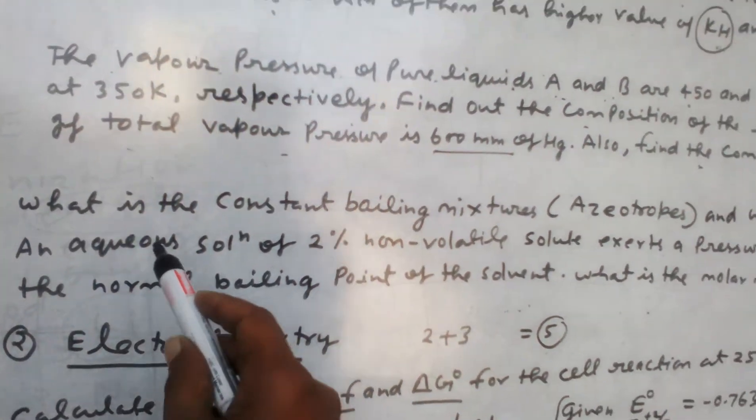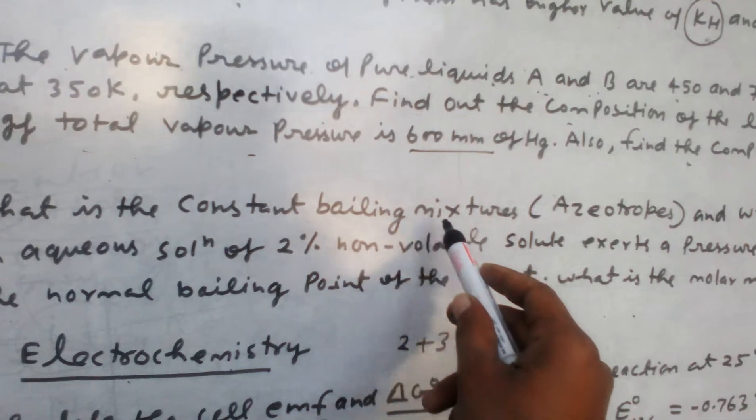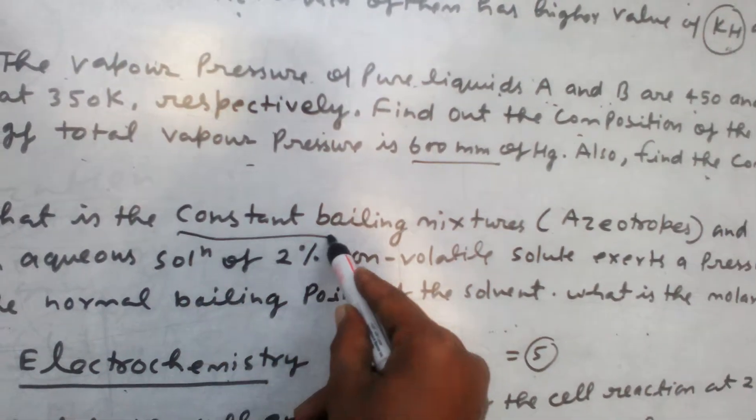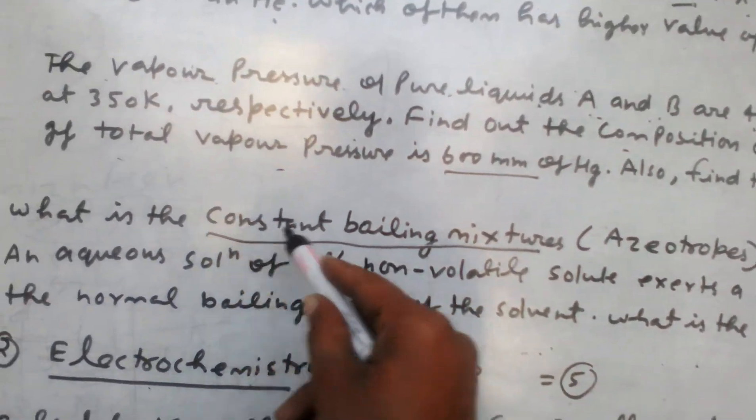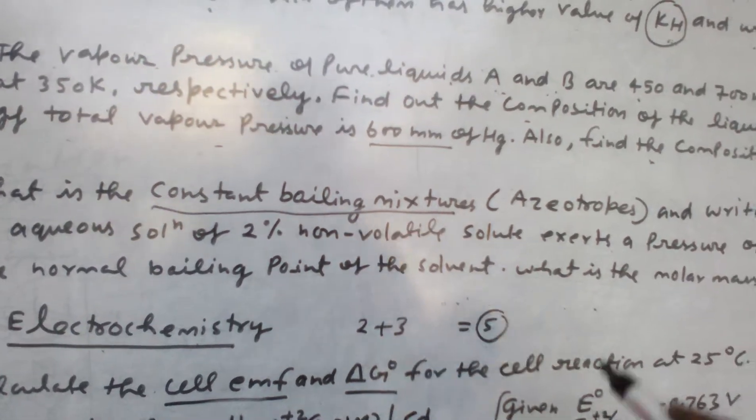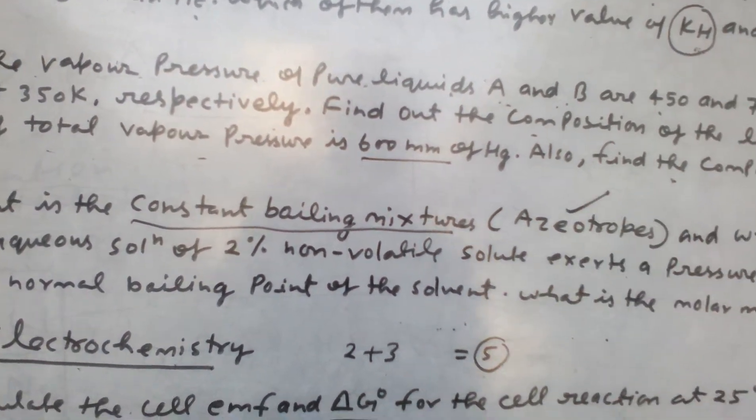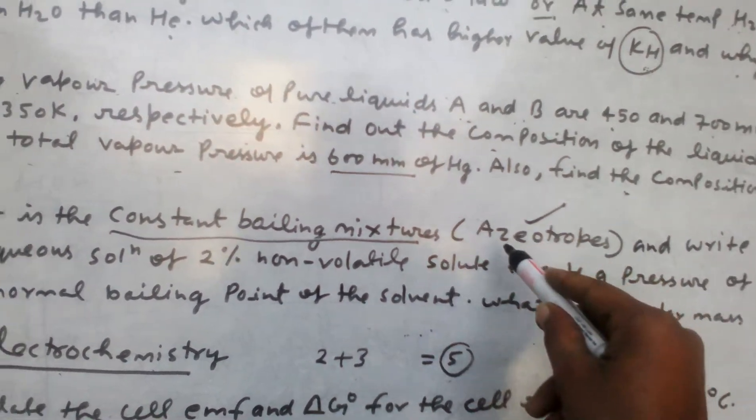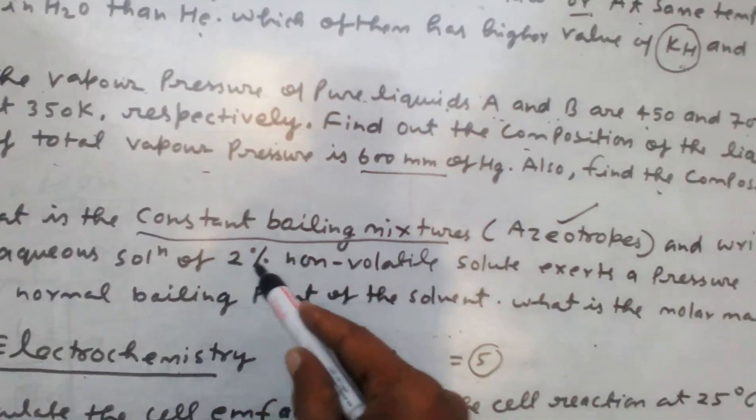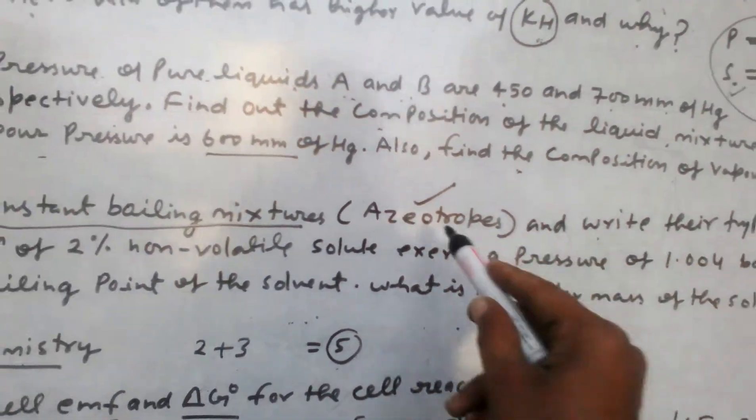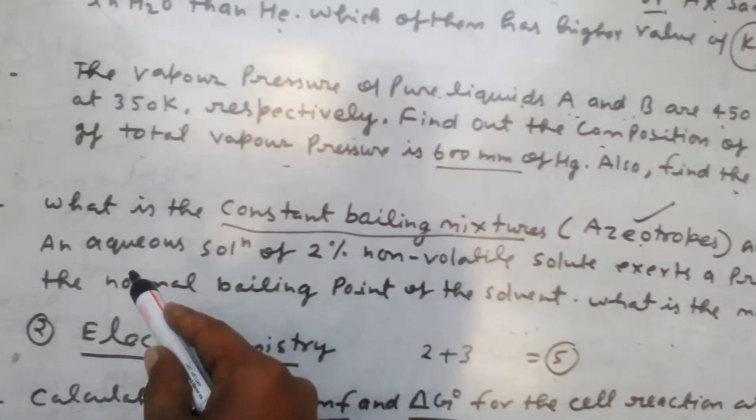The third question is what is the constant boiling mixture? We call it azeotropic solution, the most important thing in the solution chapter. Write their types also. How many types are they?